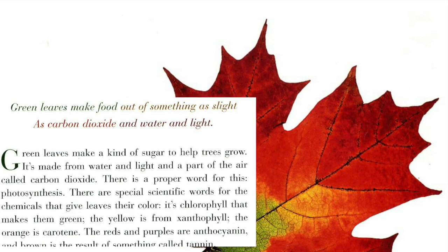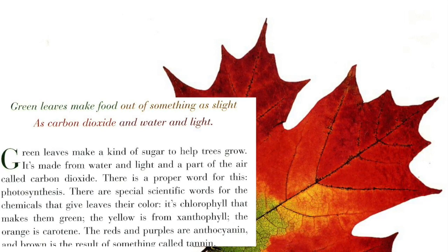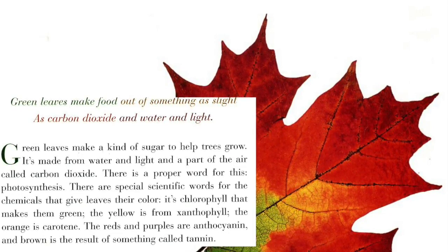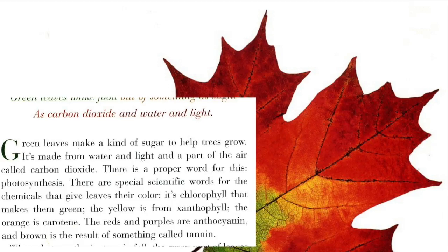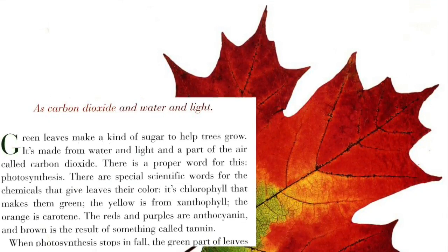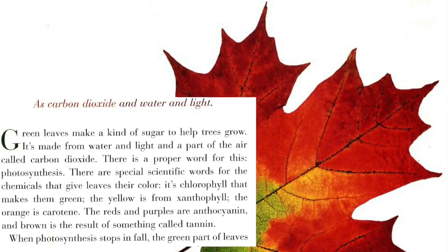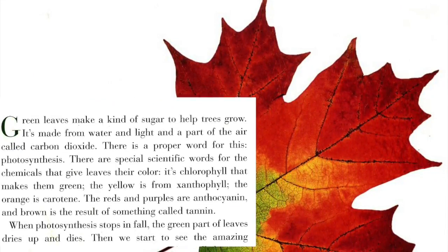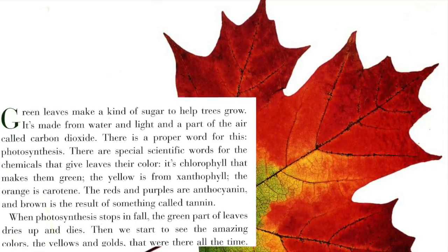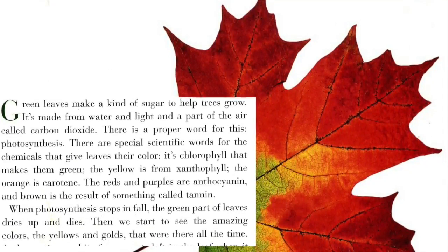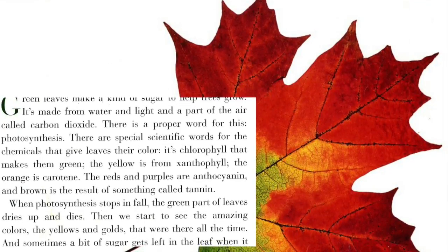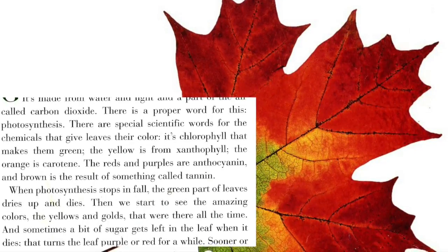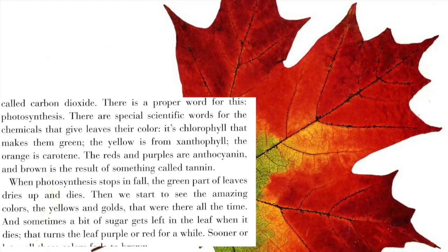Green leaves make food out of carbon dioxide, water, and light. Green leaves make a kind of sugar to help trees grow. There is a proper word for this: photosynthesis. There are special scientific words for the chemicals that give leaves their color. It's chlorophyll that makes them green. The yellow is from xanthophyll. The orange is carotene. The reds and purples are anthocyanin. And brown is the result of something called tannin.